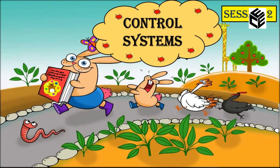In session 1 we discussed some basic concepts of control systems: what is a control system, why we use it, what is a system, what are the types of control systems, their applications, and a summary of all units from unit 1 to unit 5 that we are going to cover in the forthcoming sessions.